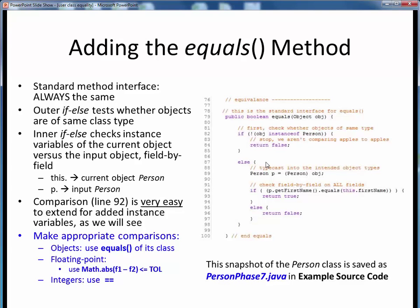Otherwise, in this else branch, we now know that this generic input object, obj, in reality is one of us. It's a person object in disguise. So the next thing we do is to typecast that generic object, obj, into a person object, p.